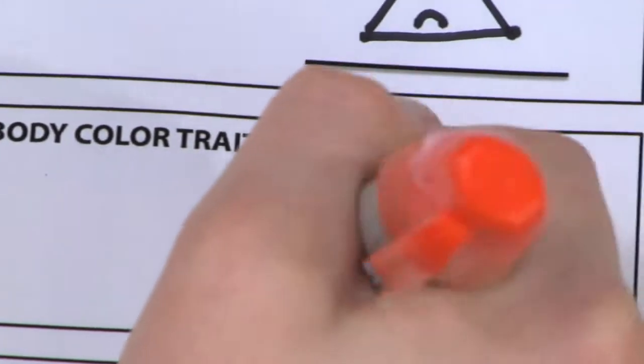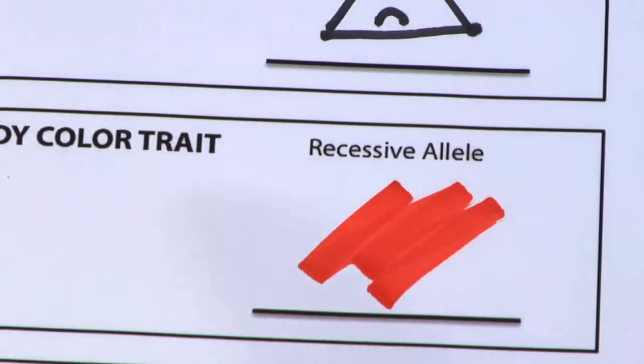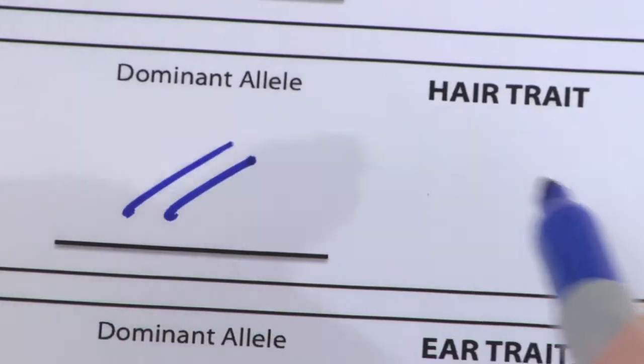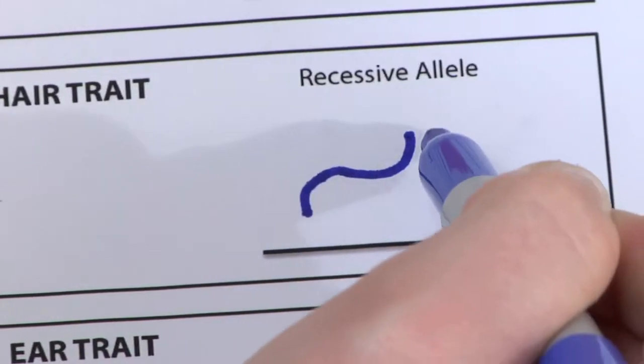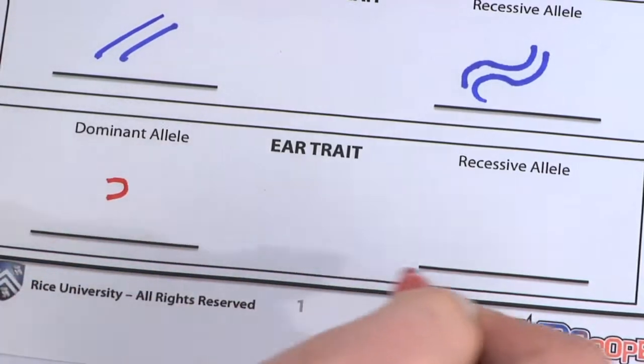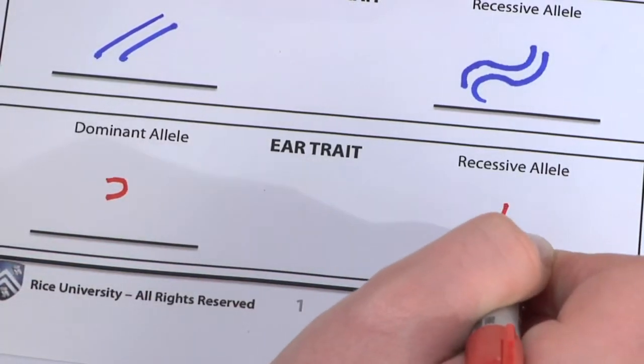Choose two distinct colors for body color. Draw straight and wavy lines for hair traits. And for ears, create two distinct lobe types.